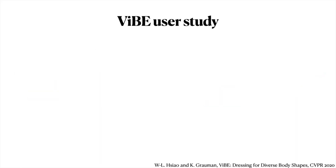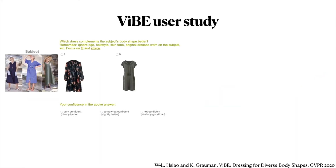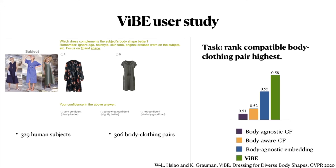We also evaluate our model according to human opinions. For each of the holdout fashion models, we ask human subjects to rank which dress is more suitable for the given body. Yielding 306 pairs, we recruit 329 subjects on Mechanical Turk. The overall trend is consistent with the automatic evaluation.